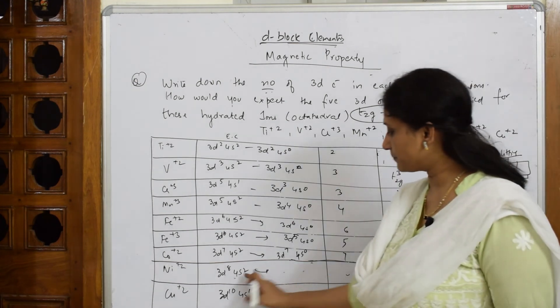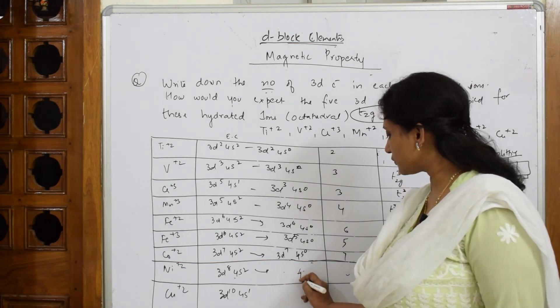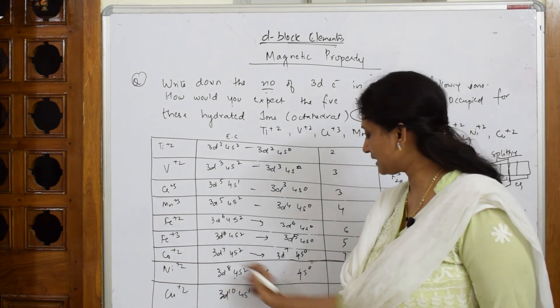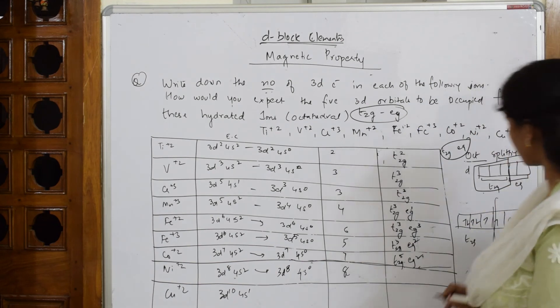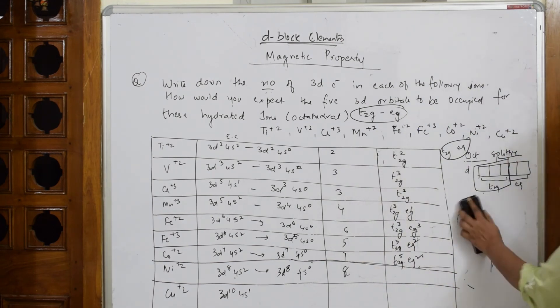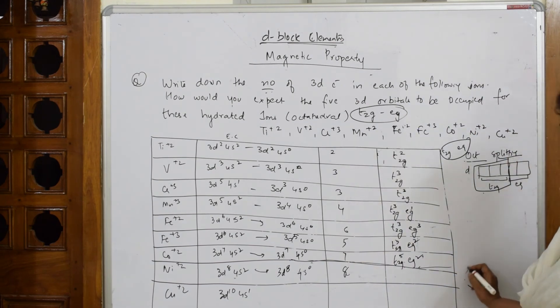Let us come back and do for nickel. Nickel 2. This is 4S⁰. 3D⁸. So 8 electrons. So how will I fill again 8 electrons? Same thing again. Now, let me write here.